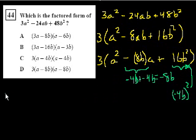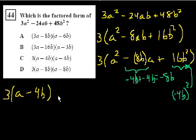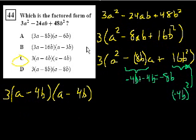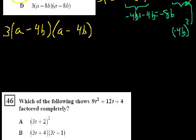So we can factor this out to be 3 times (a - 4b)(a - 4b). And that is choice C. Next problem.